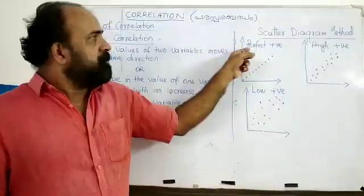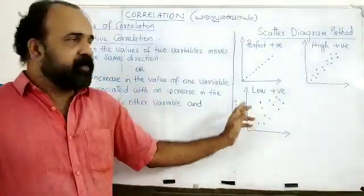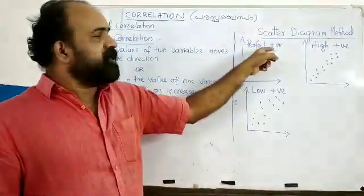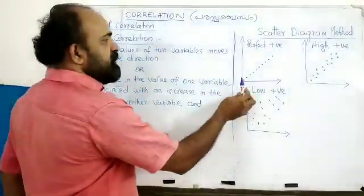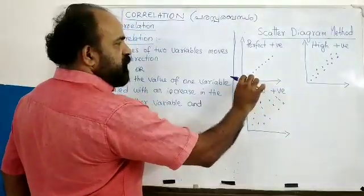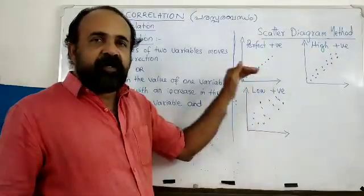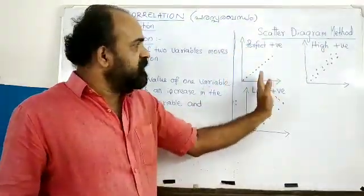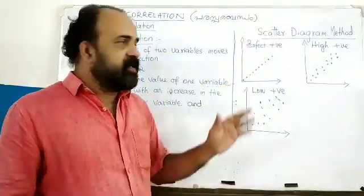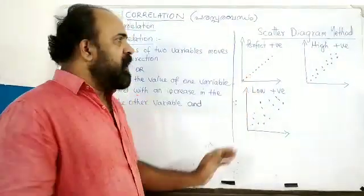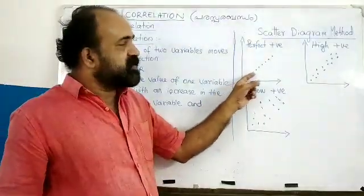Let us take two examples of positive correlation. The first case is perfect positive correlation. On the X-axis and Y-axis, the y values go to 3 and 4. When x is 1 unit, y is 1 unit; when x is 2 units, y is 2 units. That is the correct increment. If we look at the points and plot, we have a straight line.